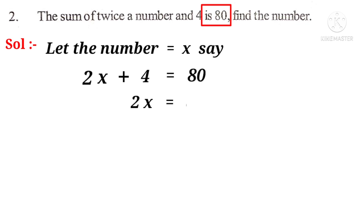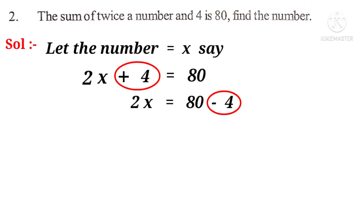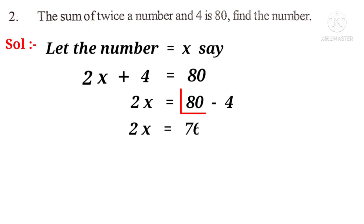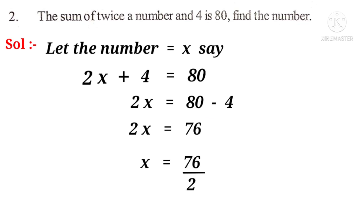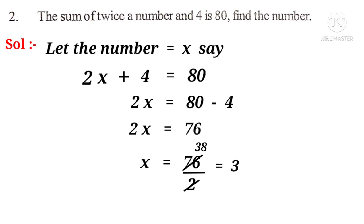So, 2x + 4 = 80. Therefore, 2x = 80 - 4 = 76. Now, x = 76 ÷ 2, because the multiplying 2 when transposed to the right-hand side it becomes divided by 2. On simplification, x = 38. So, the unknown number x is equal to 38 is the answer.